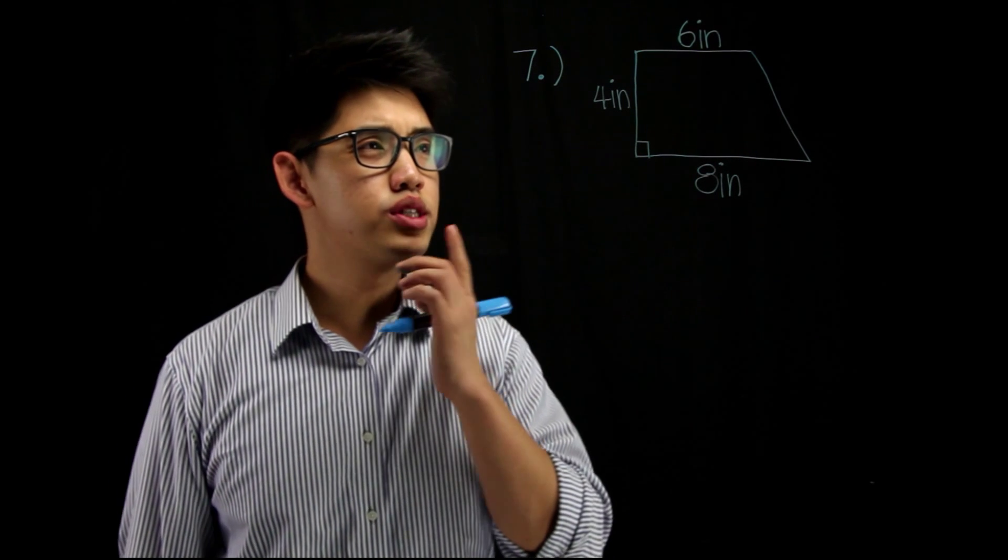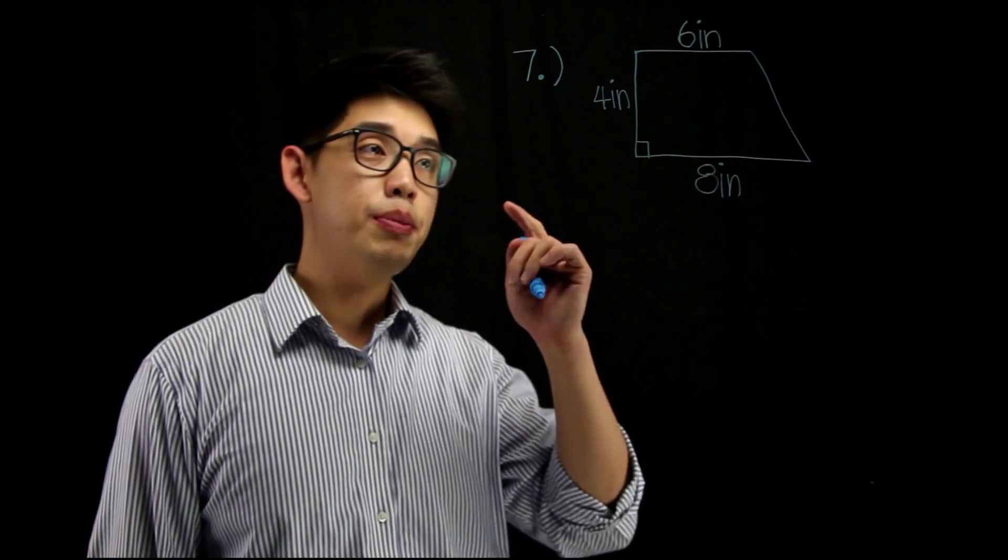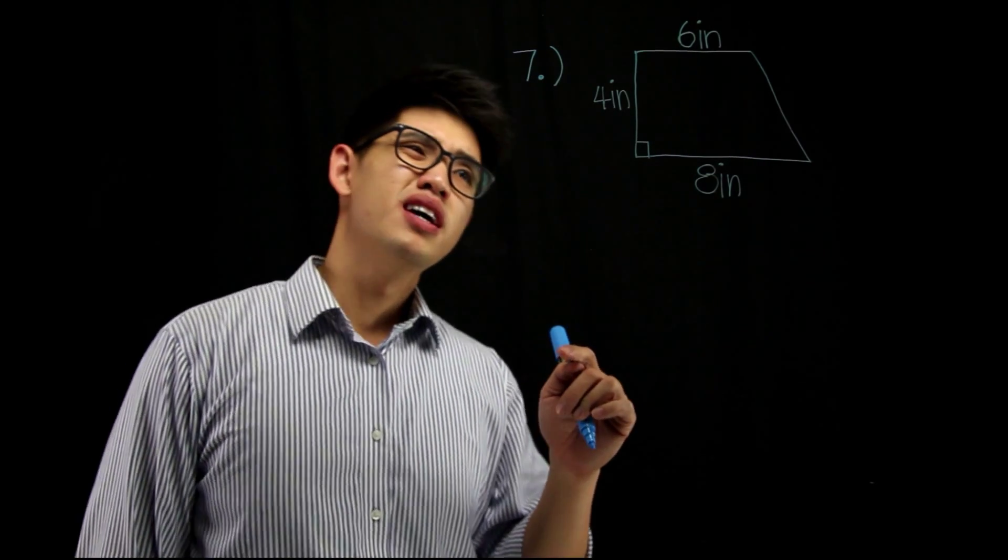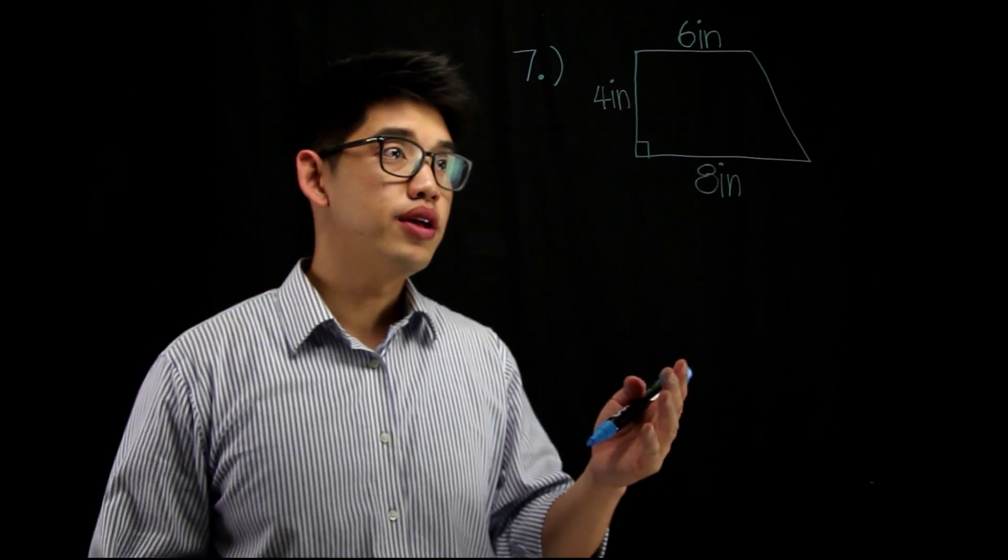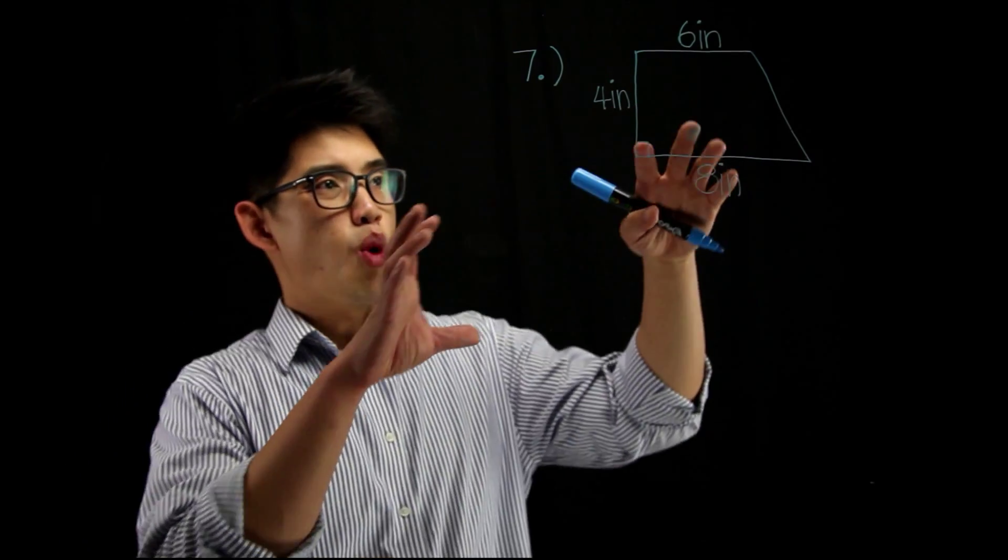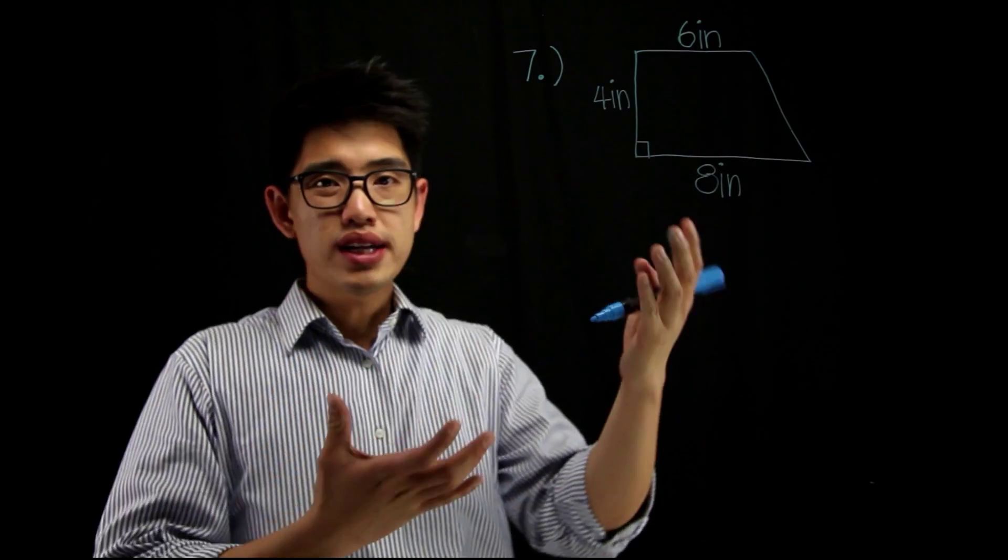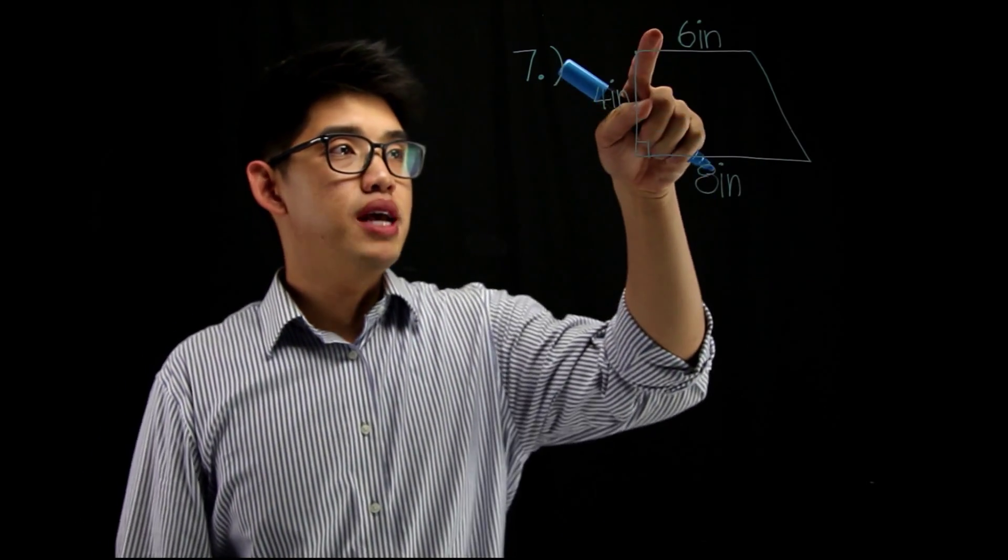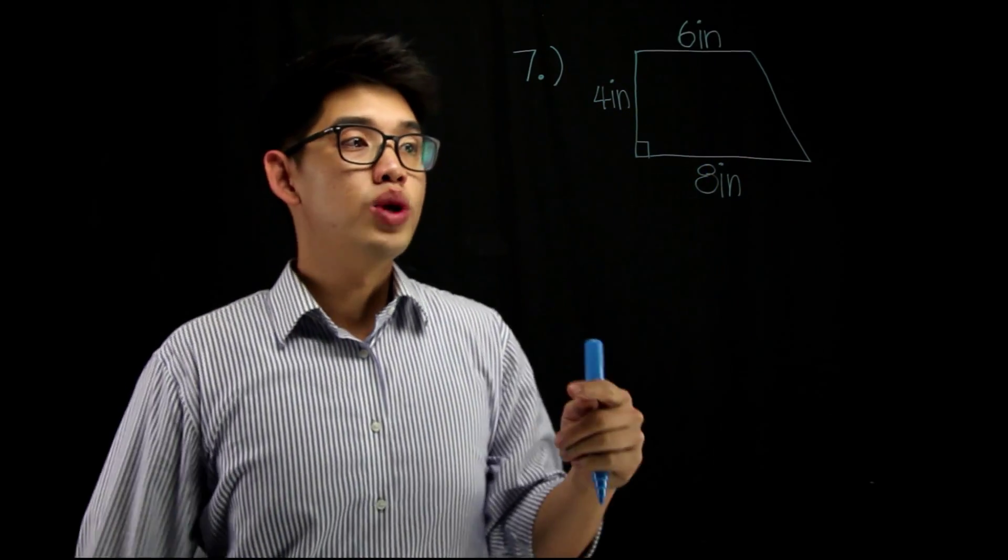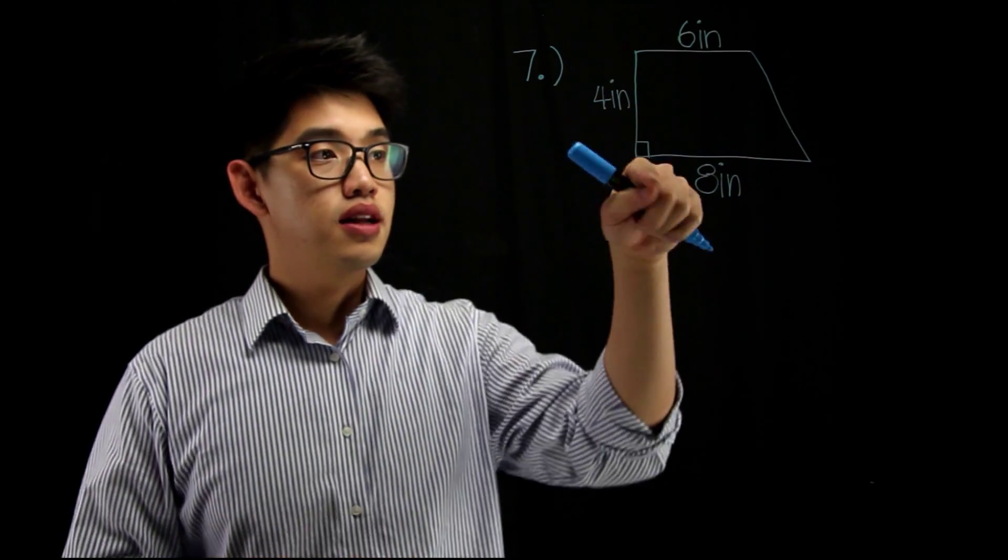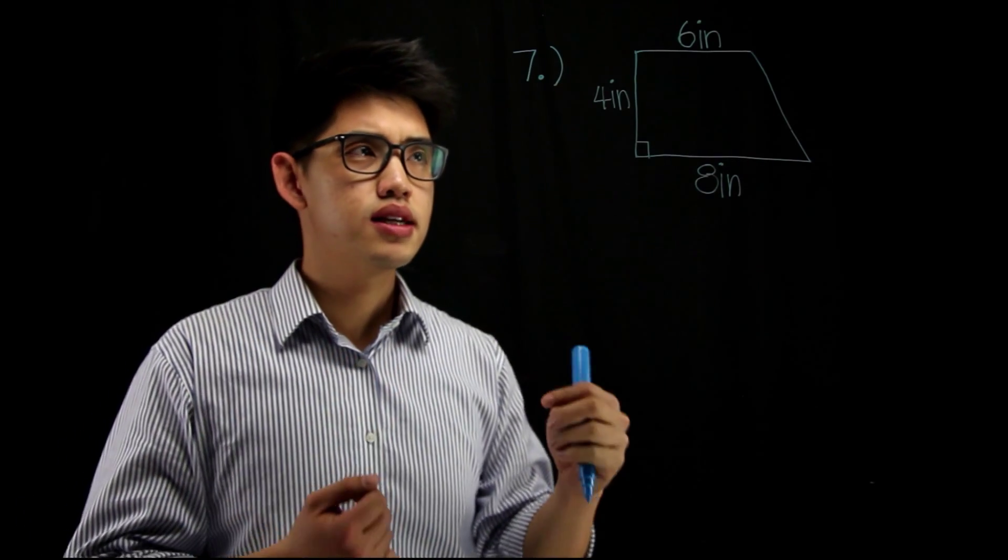For number 7, we are going to find the area of this trapezoid right here. Kind of like what we did with the triangle and the parallelogram, we can try to morph this shape into a rectangle. We see that this base right here, this top part is 6, this base right here is 8. We need to find the average of 6 and 8, the number in between 6 and 8.